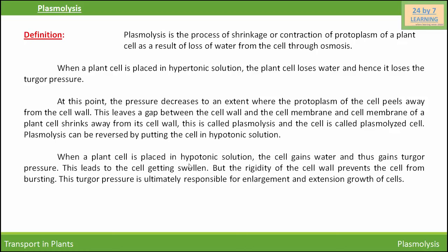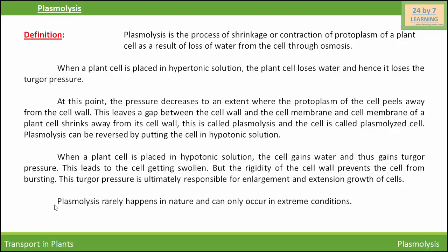When a plant cell is placed in a hypotonic solution, the cell gains water and thus gains turgor pressure as well. This leads to the cell getting swollen, but the rigidity of the cell wall prevents the cell from bursting. This turgor pressure is ultimately responsible for enlargement and extension growth of cells. Plasmolysis rarely happens in nature and can only occur in extreme conditions.